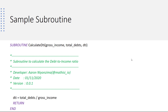Here is a sample of a subroutine. As you can see, a subroutine starts with the keyword subroutine, followed by the name of the subroutine, and in parentheses we put both inward parameters and outward parameters. Our subroutine is called Calculate DTI.